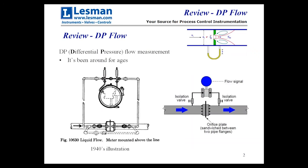Thank you, Mike. As Mike just said, we're going to look at accurate DP flow measurement in changing process conditions today. To start off, we'll do a quick review of differential pressure flow measurement — I'm just going to call it DP through the rest of this. It's been around for ages. As you can tell, there's a 1940s illustration on the left there, and it looks very antiquated because it is by today's standards, but it was still making a DP flow measurement.